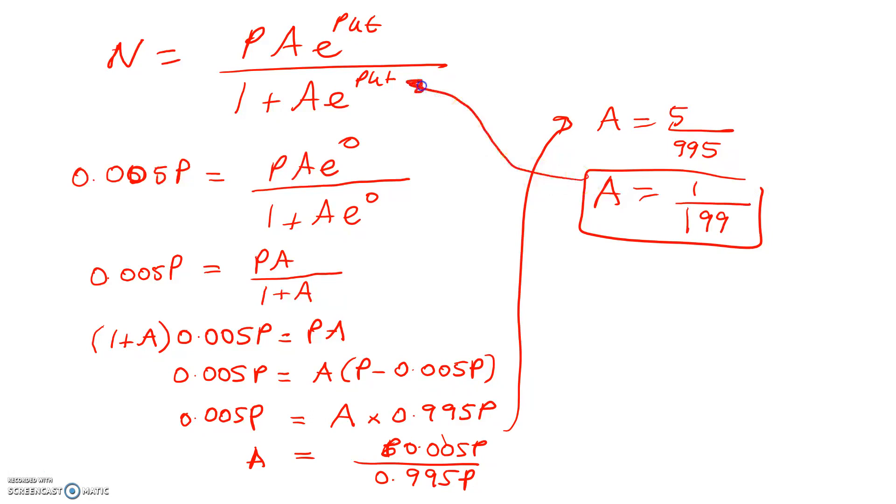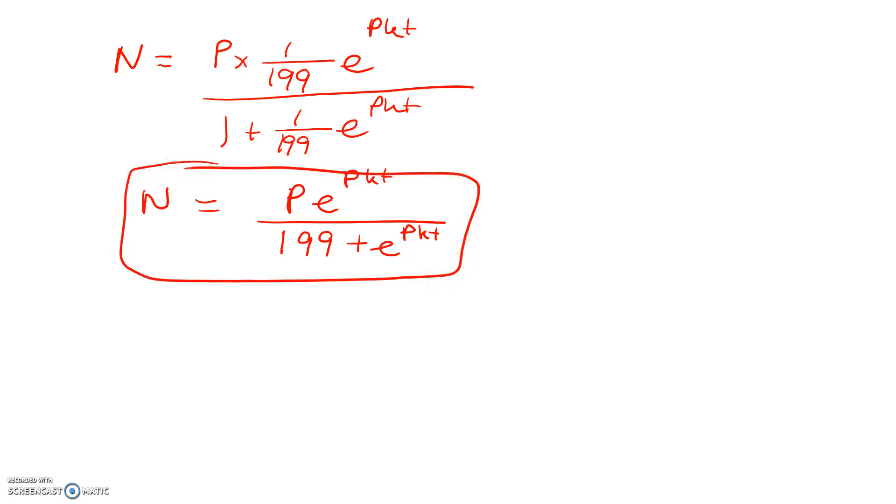Now I am going to substitute it straight into there. So N equals P times A over the denominator. Just cleaning that up gives me P times e to the Pkt divided by 199 plus e to the Pkt. So what we've got now is a better expression for N because we don't have A in there, but we've still got K.